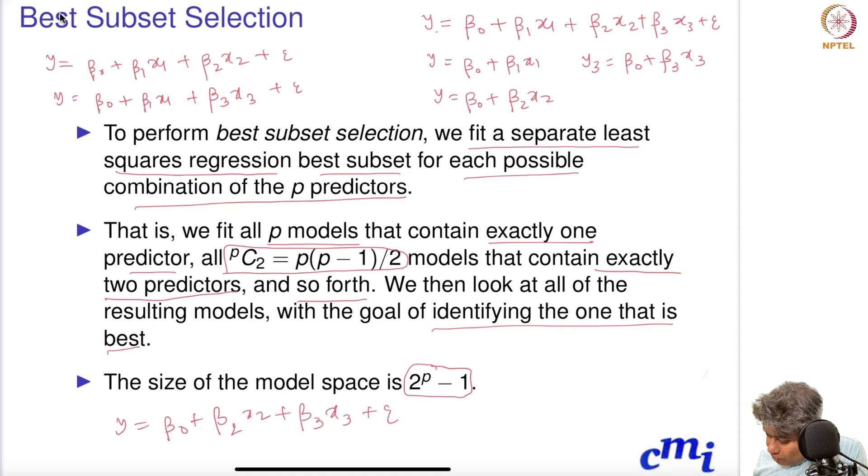How many models? One, two, three, four, five, six, seven many models. Now p is three, so 2³ - 1 is seven. There are seven many models. If there are three features, then seven many models you can fit. And for each model you can calculate the RMSE and then see which model has the least RMSE. That means that model has the best accuracy. You choose that model as your final model.